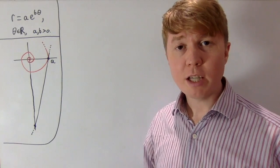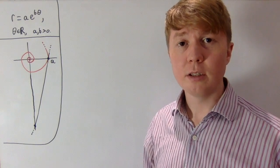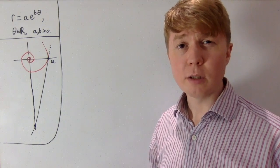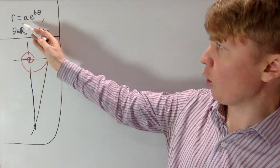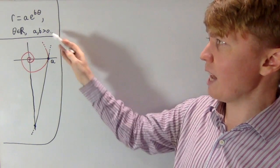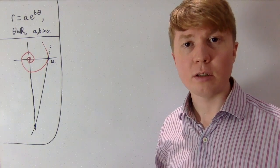We're going to have a look at a really interesting property of logarithmic spirals. You define a logarithmic spiral using polar coordinates: r equals a to the bθ, where a and b are some positive constants.